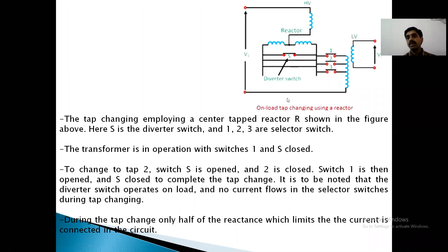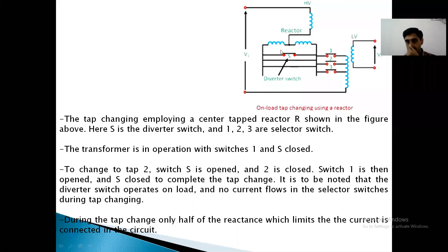Here is one example of an onload tap changing transformer — a high voltage winding with reactor midpoint tapping. These are the different taps connected to the winding. The total high voltage winding has taps, and we have one diverter switch. Let us see how it operates.